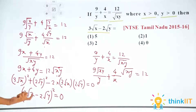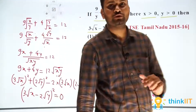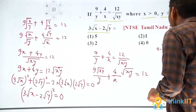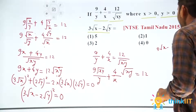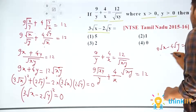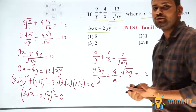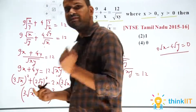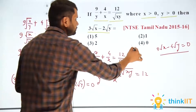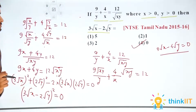So I can write this as 3 root x minus 2 root y, whole square, is equal to 0. So if 3 root x minus 2 root y whole square is equal to 0, then the value of 3 root x minus 2 root y should also equal 0, because if the square of a number is 0, then the number itself must be 0. So the answer is option 4: 0. Thank you.